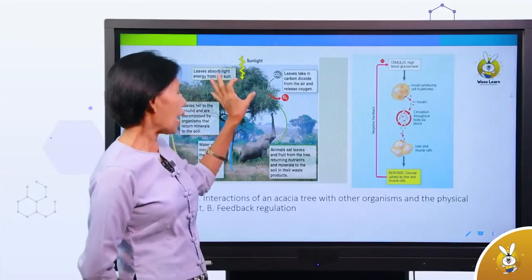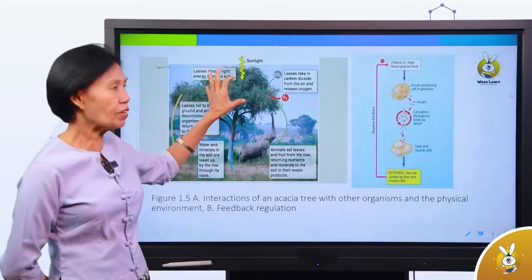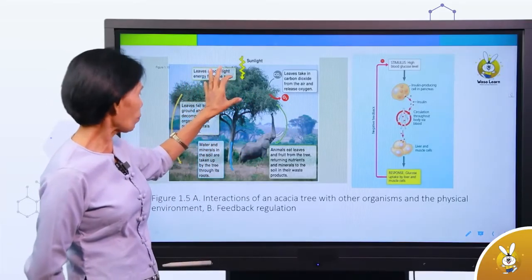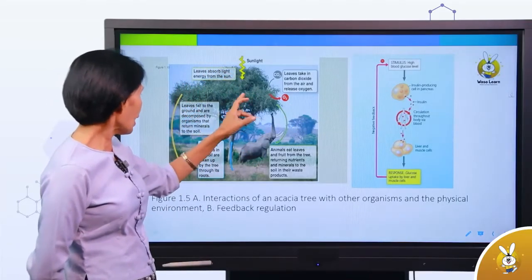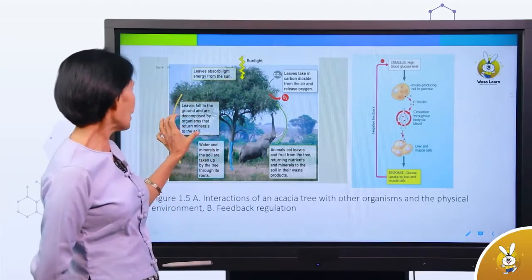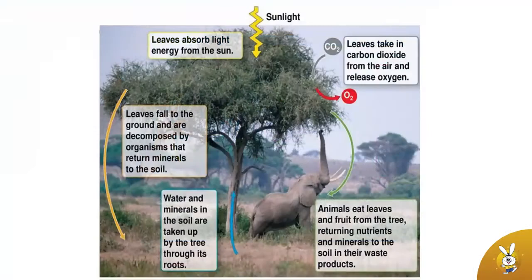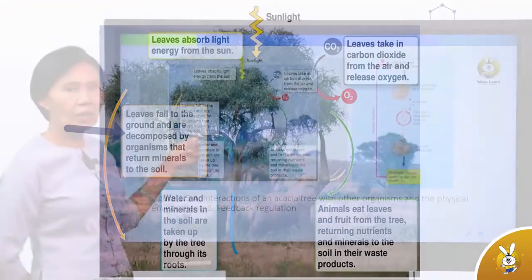This is the photosynthesis process. Leaves fall to the ground and are decomposed by organisms, returning minerals to the soil.